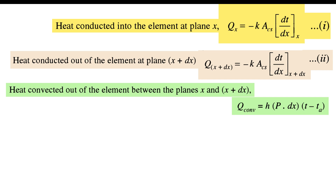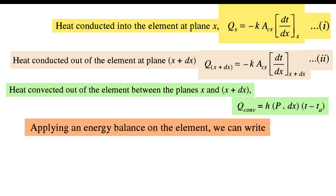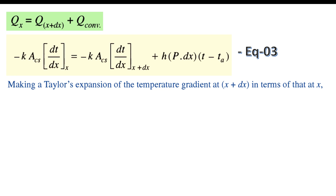Applying an energy balance on the element: Q_x = Q_{x+dx} + Q_convection. Substituting the values from Equations 1, 2, and 3 — putting Q_x from Equation 1, Q_{x+dx} from Equation 2, and Q_convection from Equation 3 — we obtain a combined equation. We then make a Taylor expansion of the temperature gradient at x+dx in terms of that at x.